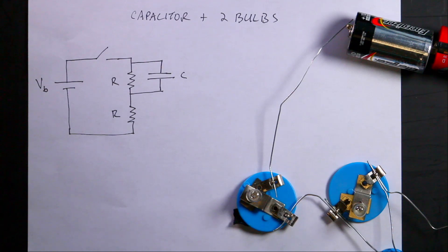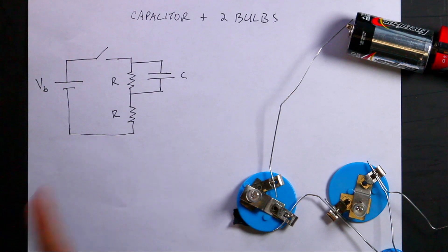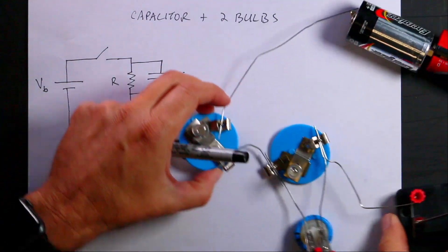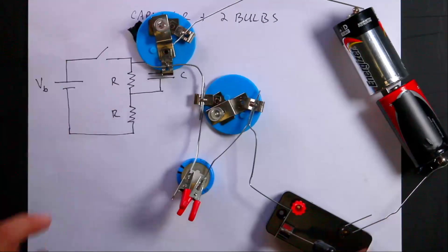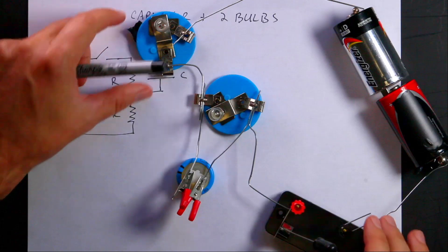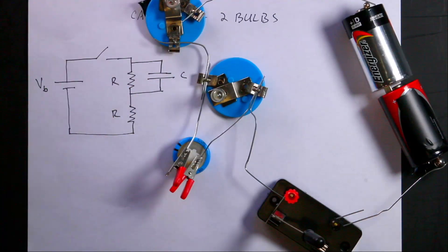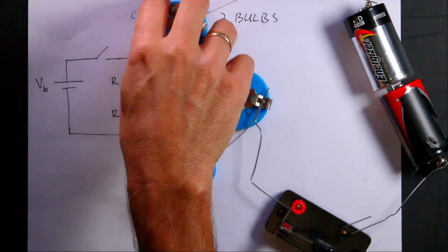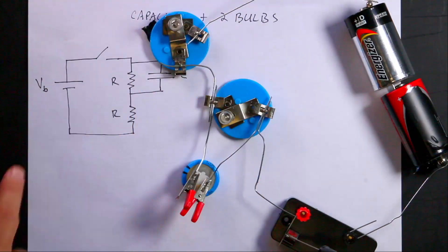Here's a fun circuit problem. It is two light bulbs connected to a battery with a capacitor and a switch. Spoiler alert, I actually have this setup right here. The question is: when the switch is closed, what will happen to the brightness of these two bulbs?